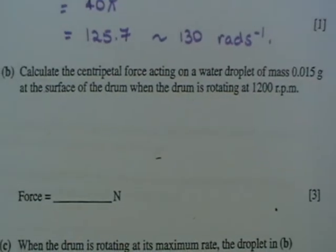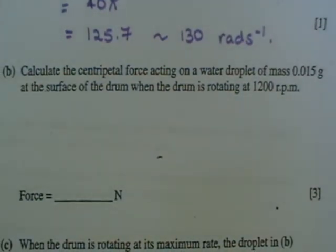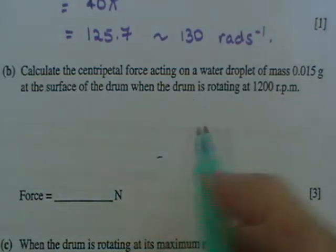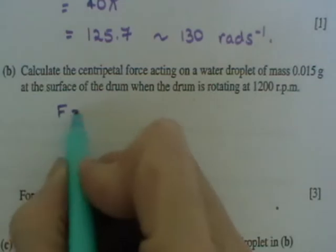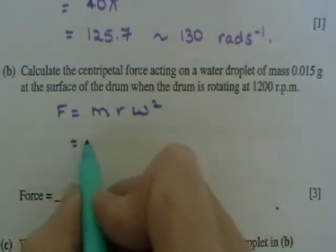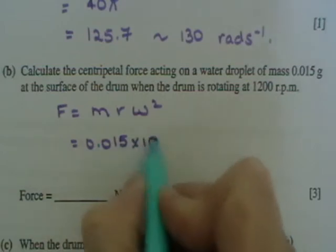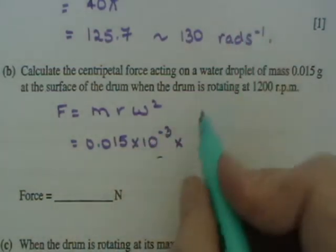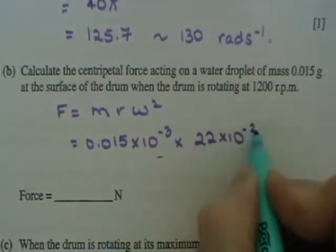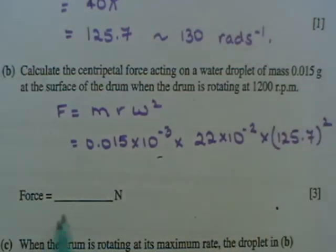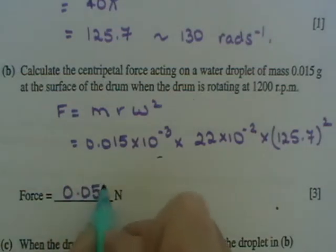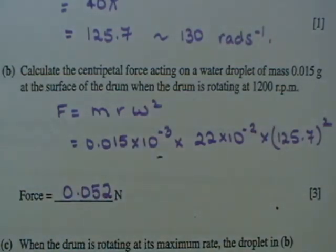Calculate the centripetal force acting on the water droplet of mass 0.015 grams at the surface of the drum when the drum is rotating at 1200 revolutions per minute. So we've already got the angular frequency when it's rotating at 1200 revolutions per minute. So f equals mr omega squared. m is 0.015 by 10 to the minus 3. Just watch that. The radius of the drum is 22 centimeters. So that's by 10 to the minus 2. And that's multiplied by 125.7 squared. That gives you an answer of 0.052 newtons. So there's 0.052 newtons of force acting on a water droplet when it's rotating at that speed.